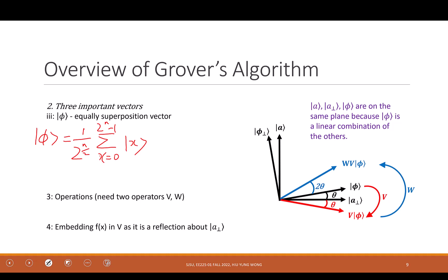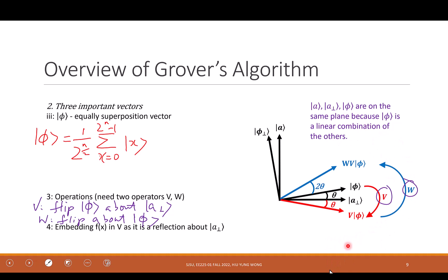Grover's algorithm has two operators: V and W. First, W flips ψ about A⊥. Then V flips the resulting vector about ψ. Repeat: flip about A⊥, flip about ψ, flip again, repeat. Each step rotates by 2θ toward A. Eventually the final vector aligns with A. That is the idea of Grover's algorithm.